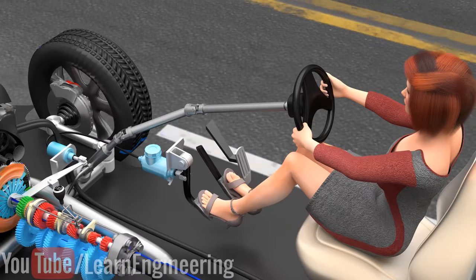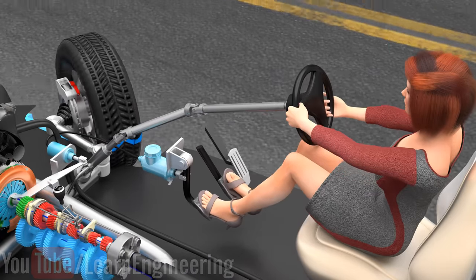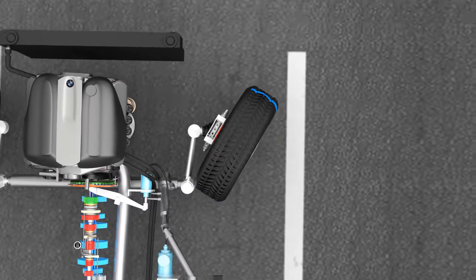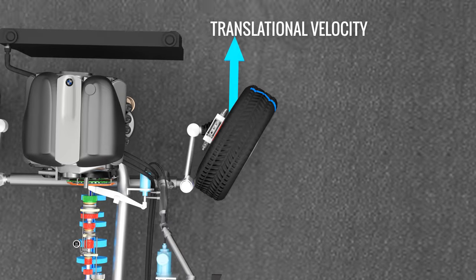Now, let's analyze the steering mechanism at the time of braking. Due to the brake pads being activated, the wheels stop spinning. Even though the wheels are turned, since they are not rotating, there will be no rotational velocity at all.